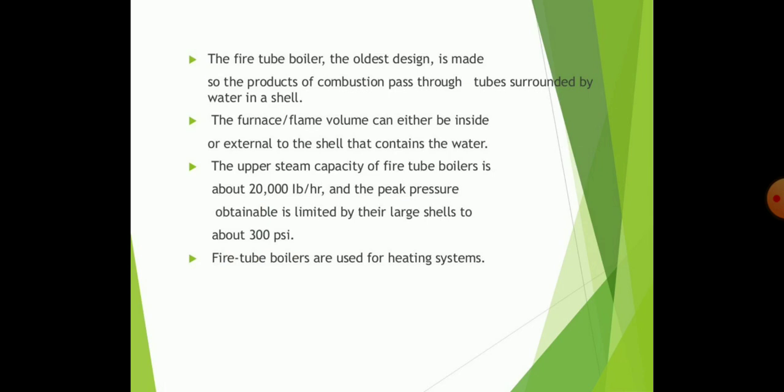Fire tube boilers are the oldest design, made so that the products of combustion pass through tubes surrounded by water in the shell. The furnace flame volume can be either inside or external to the shell that contains the water. The upper steam capacity of fire tube boilers is about 20,000 liters per hour, and the peak pressure obtained is limited by their large shells to about 300 psi. Fire tube boilers are used for heating systems.